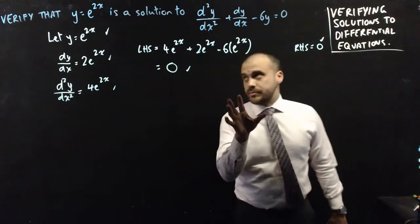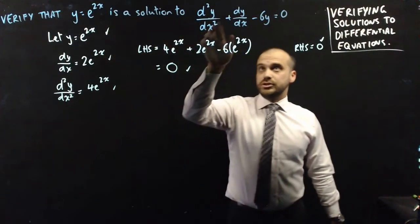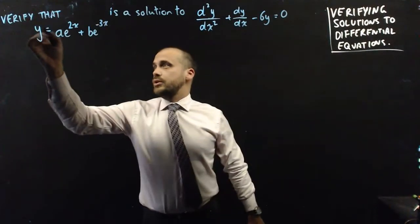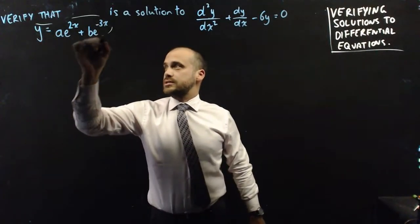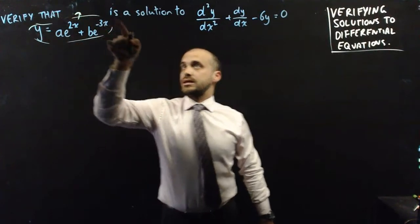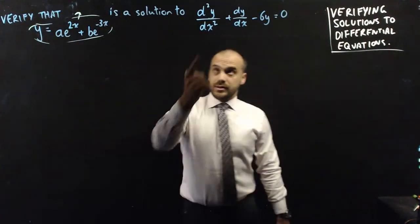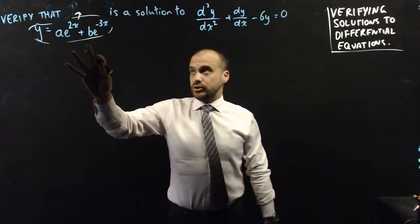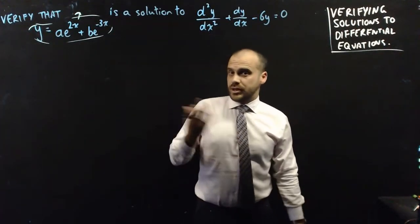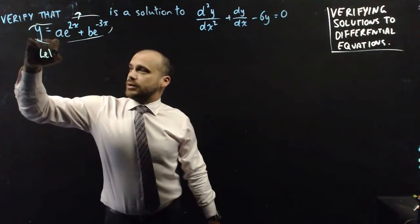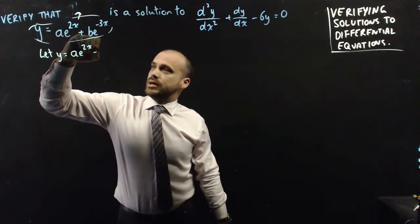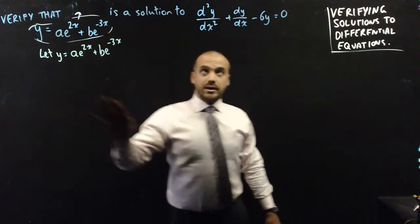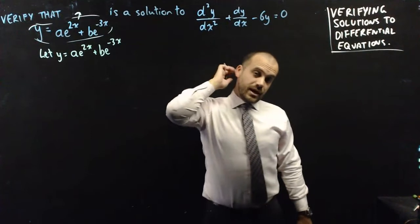This is a solution, but it's not the only solution. Question 3: we're going to verify that y equals ae to the 2x plus be to the negative 3x is a solution to the same differential equation. We're going to let y equal ae to the 2x plus be to the negative 3x and put it in the equation to see if it works.